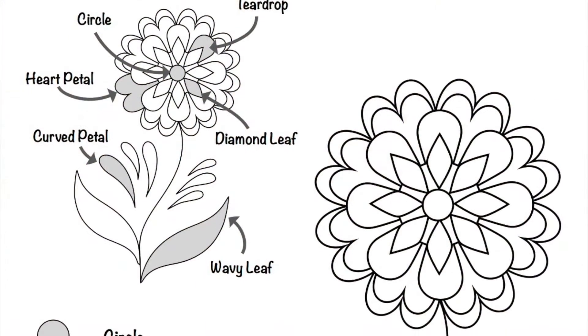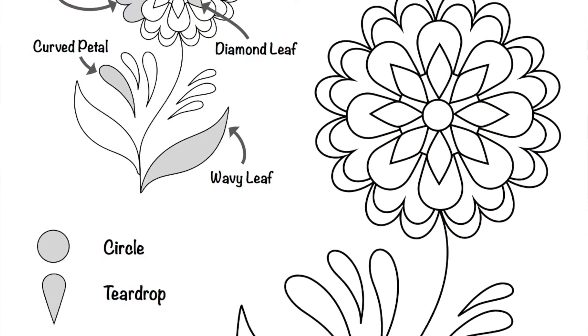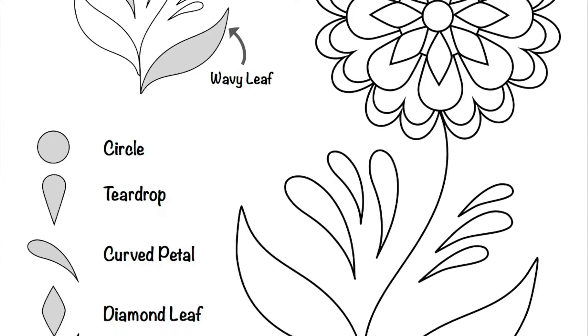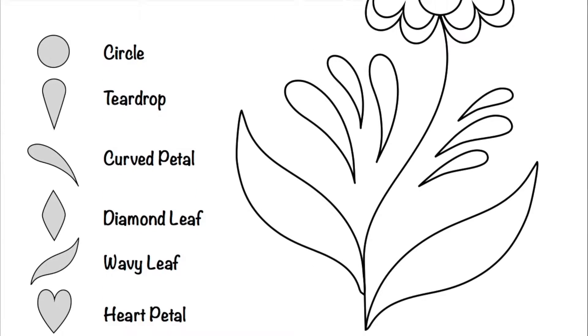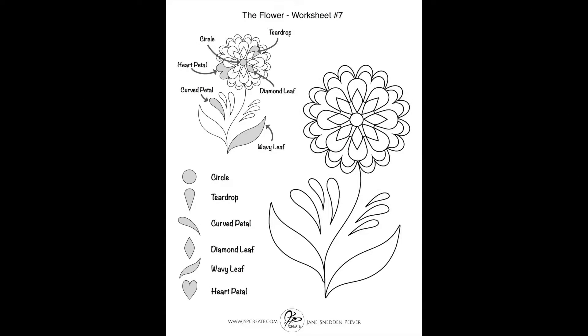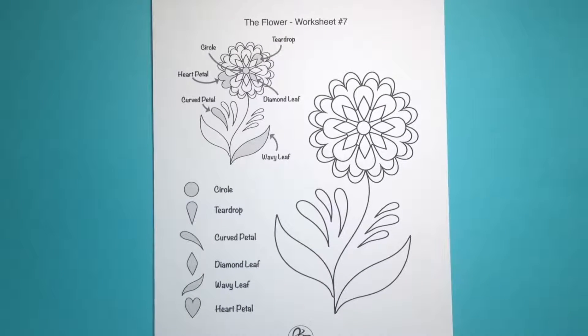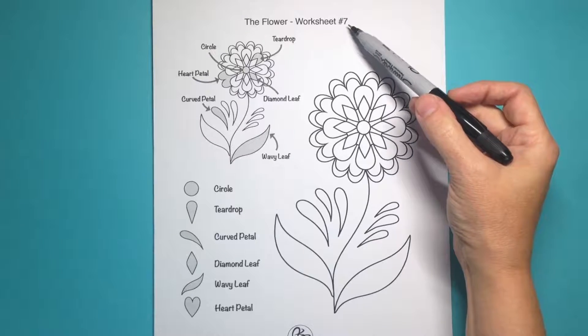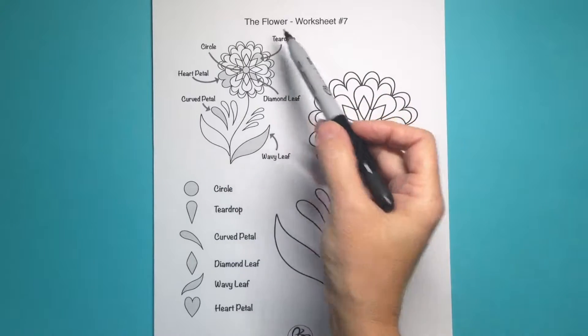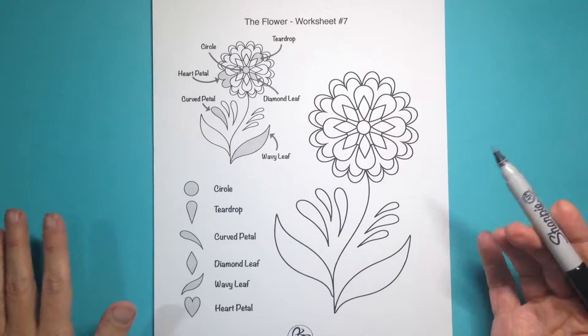Grab your pen and pencil and print out your worksheet. Our worksheet today looks a little different — we don't have all the little shapes to trace. This one is about what we can do with the shapes, so you can take it into your own sketchbook or onto your own piece of paper and practice there.